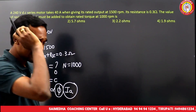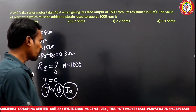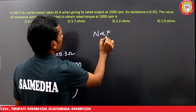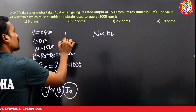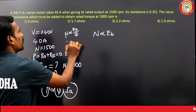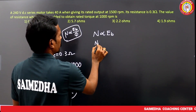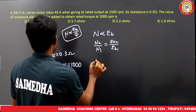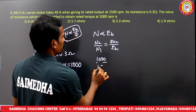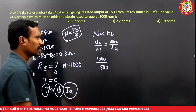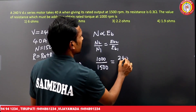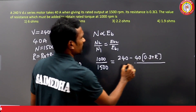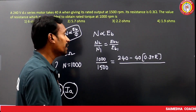With flux constant, speed is directly proportional to Eb. So N2/N1 = Eb2/Eb1. N2 = 1000, N1 = 1500. Eb1 = 250 − (40 × 0.3) = 240 − 12 = 228 volts. Eb2 = 240 − 40 × (0.3 + R), where R is the extra resistance to find.